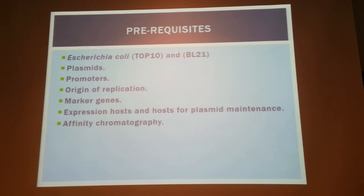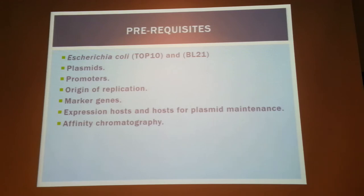BL21 requires a T7 promoter binding site in order to be compatible with that host strain. You also need to consider the origin of replication and the marker genes, which is generally an antibiotic resistance marker. You then have to think about your expression host and your affinity chromatography system for downstream purification.